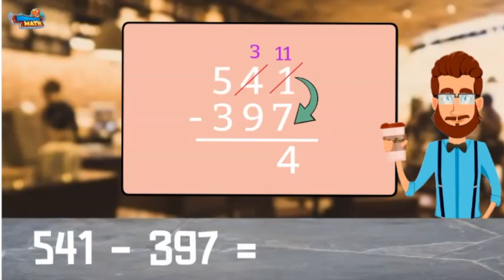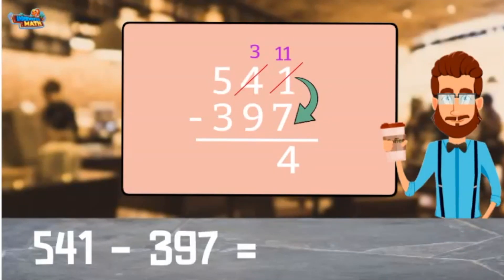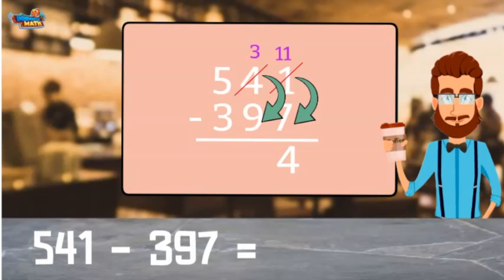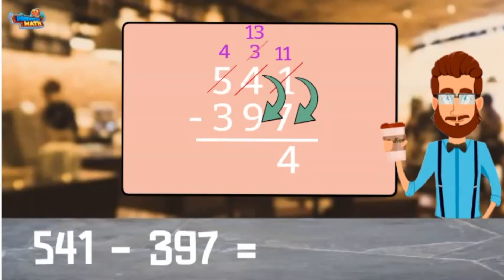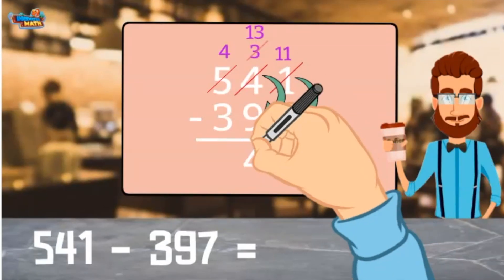Now the process starts all over again in the tens place. Is there more on the floor? Yes, so I go next store and get 10 more. Cross out the 5 and make it a 4. Cross out the 3 and make it a 13. Then subtract 13 minus 9 for an answer of 4.